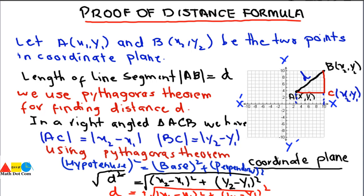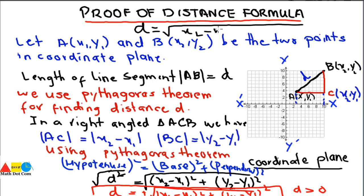So the distance formula is: d = √[(x2 − x1)² + (y2 − y1)²]. This is the formula of distance that we have derived. We can derive it by considering two points in the coordinate plane, drawing them to form a right-angle triangle, and applying the Pythagorean theorem, since the distance formula is an application of the Pythagorean theorem.